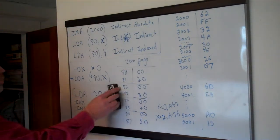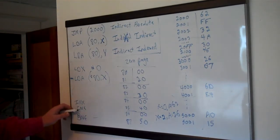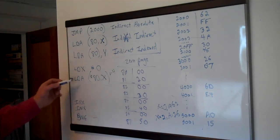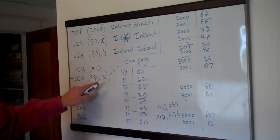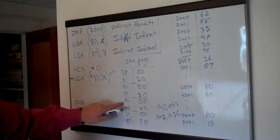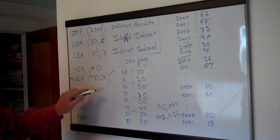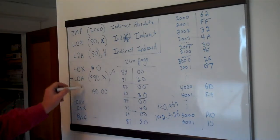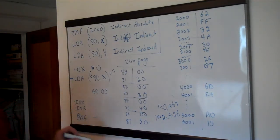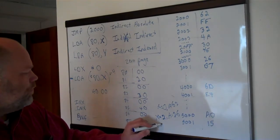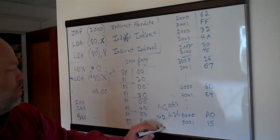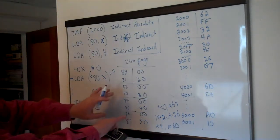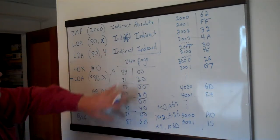If we go around the loop one more time, X equals 4 after incrementing twice more. 80,4 means we add 4 to 80, so we get 84. Load the low byte from 84 (00), load the high byte from 85 (40), and this becomes load A from 4000. When X equals 4, we get A from 4000, which is 6D. So this allows you to have a series of pointers in memory that can point out to different places.